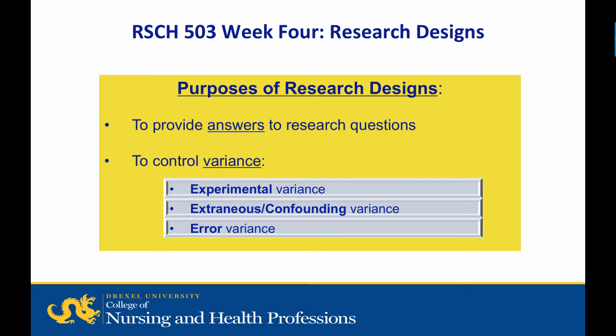There are two purposes to research designs. One, to provide answers to the investigator's research questions. And two, to control variance. The technical function of research design is to control the variance observed in the dependent variable. Variance is controlled by: one, maximizing the independent variable's effects on the dependent variable — that is, maximizing treatment variance; two, minimizing error factors; and three, controlling extraneous or confounding variance.